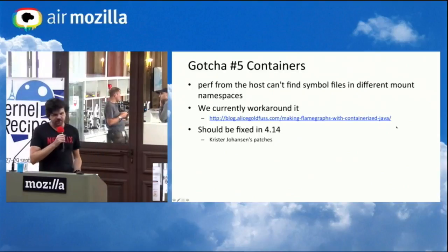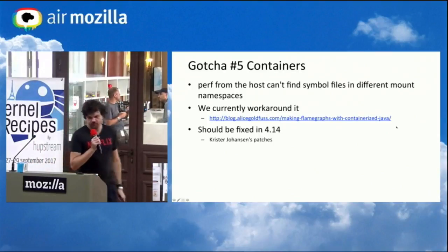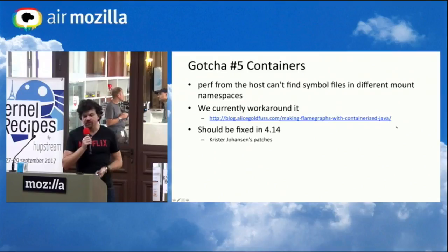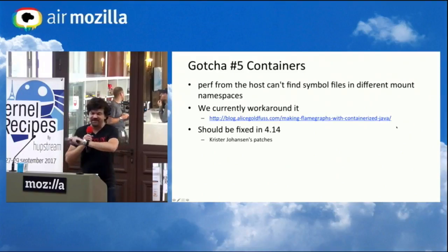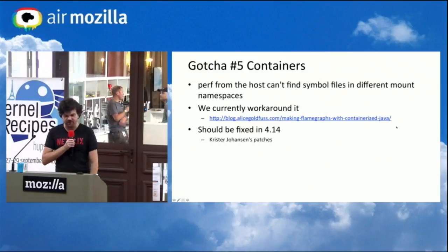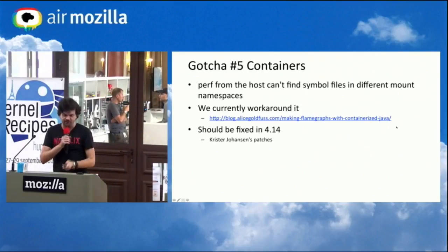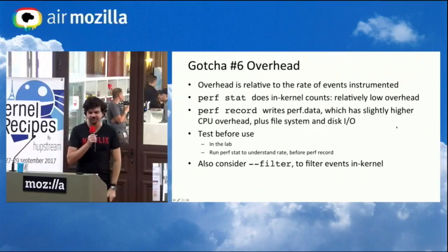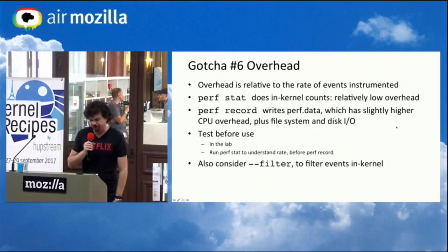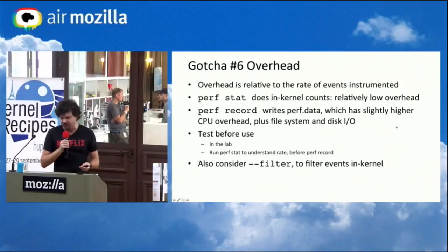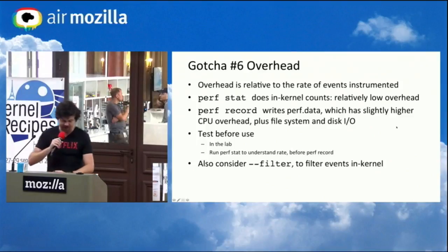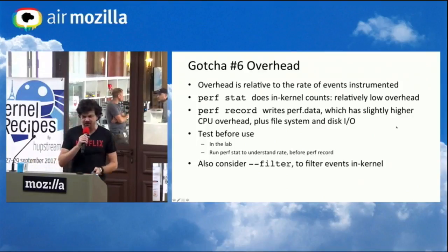Containers are another big gotcha, and we use containers a lot at Netflix. If perf is trying to find symbol files in /tmp, that temp is somewhere else because it's a different namespace. Alice did a blog post on this. This should be fixed in Linux 4.14 because there was a new patch set so that perf would look up other namespaces. The last gotcha is overhead — whenever you use perf, be aware of the rate of events, which is why I do a perf stat first to see the rate before instrumenting.